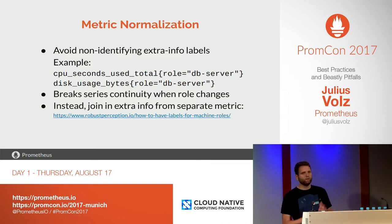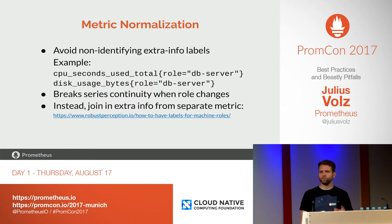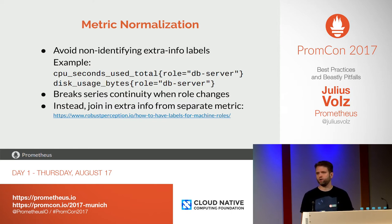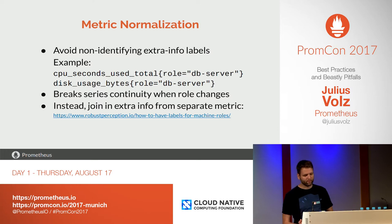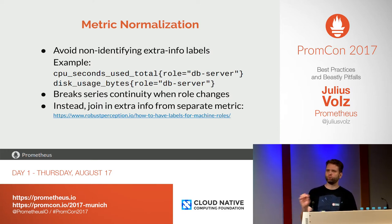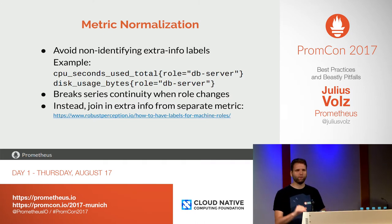Metric normalization: try not to put anything into label values that's not strictly needed for the identification of a given series. For example, if you're building something like a node exporter and exposing CPU and disk usage, don't put a machine role label into every metric. This breaks series continuity every time the machine role changes — you get a completely new set of time series, which is unnecessary. A better thing to do is have a completely separate metric in that exporter containing only that label with a value of one, and join it in during queries when you really need it.